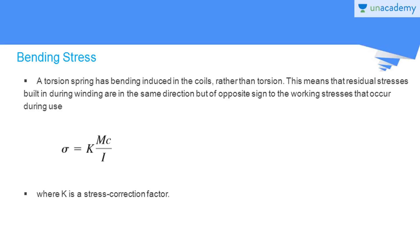Now we discuss bending stress. To resist the reduction in the mean coil diameter of helical coil torsion springs, the springs are induced with bending loading. We are going to discuss the magnitude of the bending stress developed in the coils due to induced bending loading while manufacturing. A torsion spring has bending induced in the coils rather than torsion. This means that residual stresses built in during bending are in the same direction but opposite sign to the working stresses that occur during use. During use we apply torsion loadings, while manufacturing we applied bending loadings, and the stresses developed by these two loadings are opposite in direction. The stresses developed by bending while manufacturing are the residual stresses.